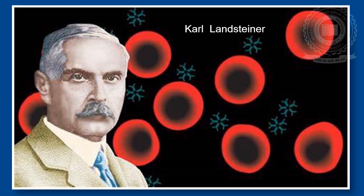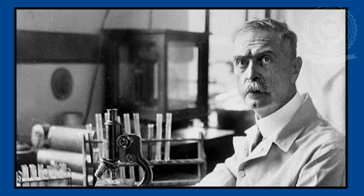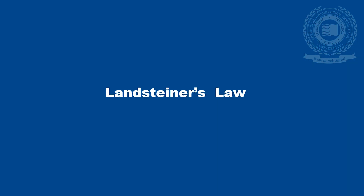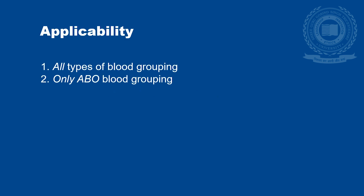Karl Landsteiner was an Austrian biologist, physician, and immunologist. He was the very first to distinguish the main blood groups. He developed the modern system of classification of blood grouping in the year 1900. For this great achievement, he received the Nobel Prize in Physiology in 1930. He stated a law related to blood grouping called Landsteiner's Law.